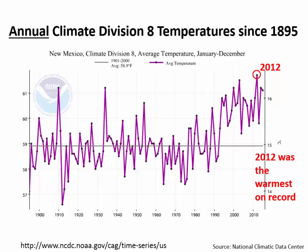Remember, the previous graph showed 2012 was also the seventh driest on record. So the current drought has been a warm drought — not as intense in terms of least precipitation as other droughts, but it's been the warmest one. This upward trend is pretty common across New Mexico and all across the country — you can see this upward trend, but within the trend there are year-to-year variations.